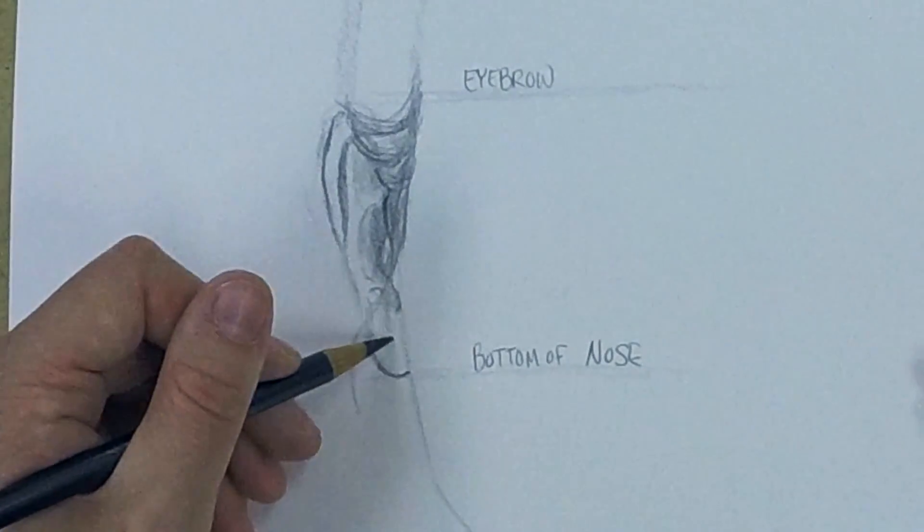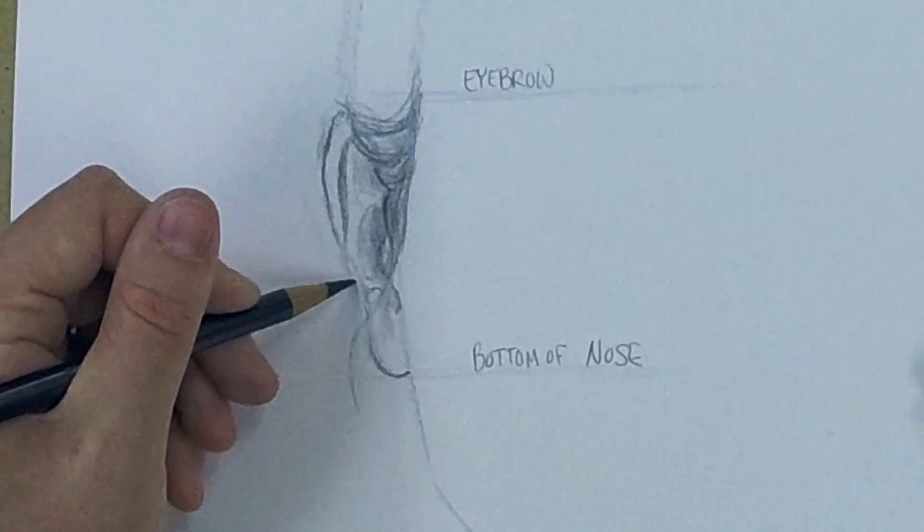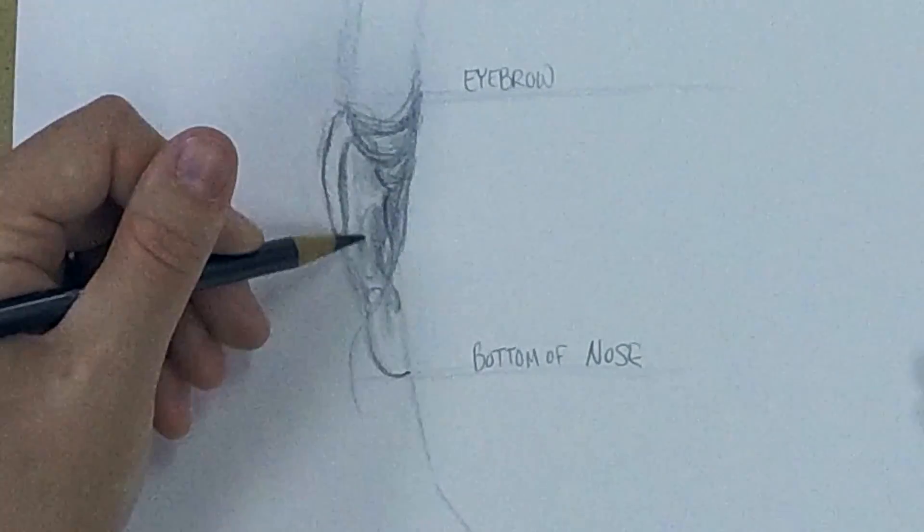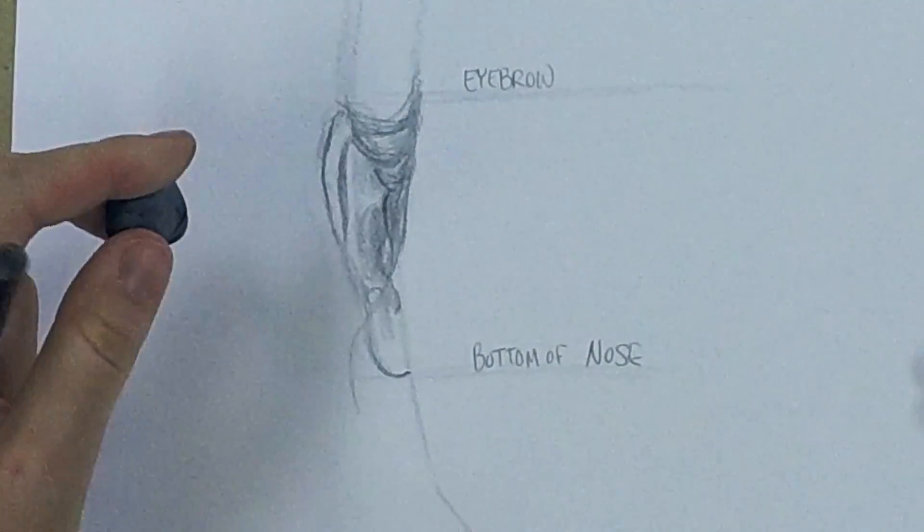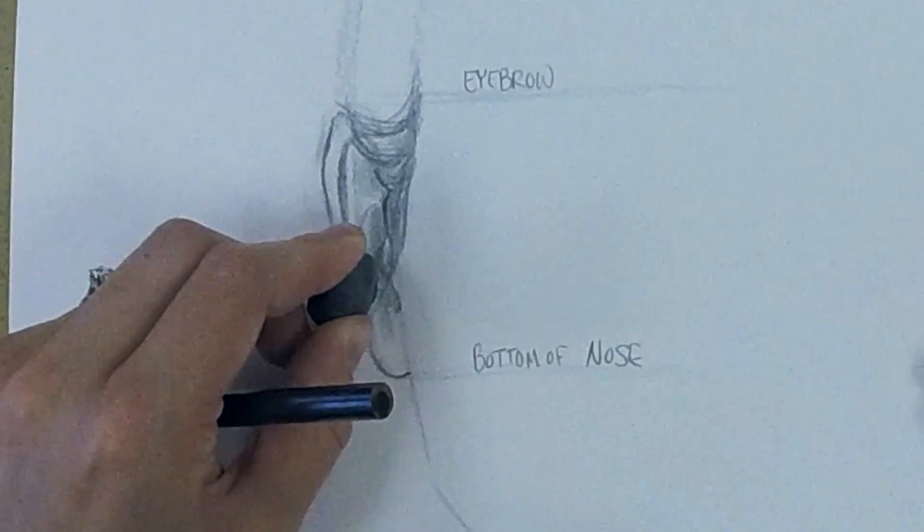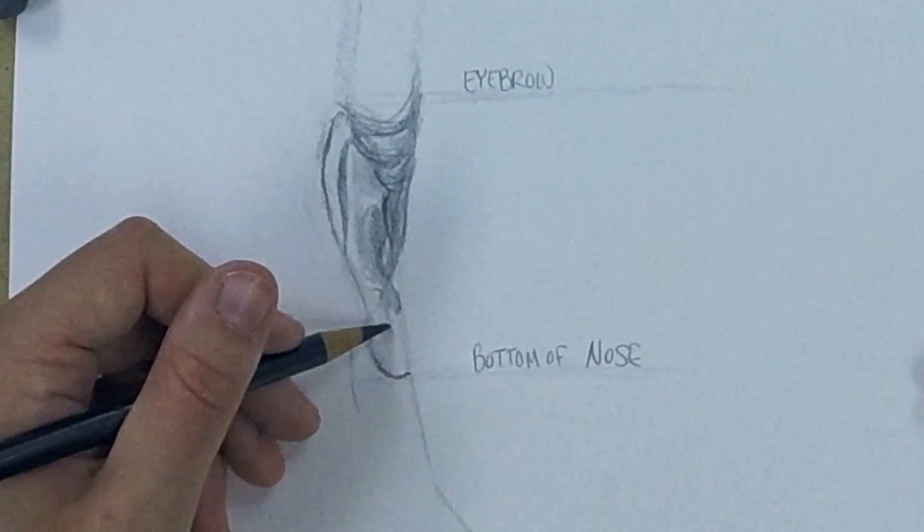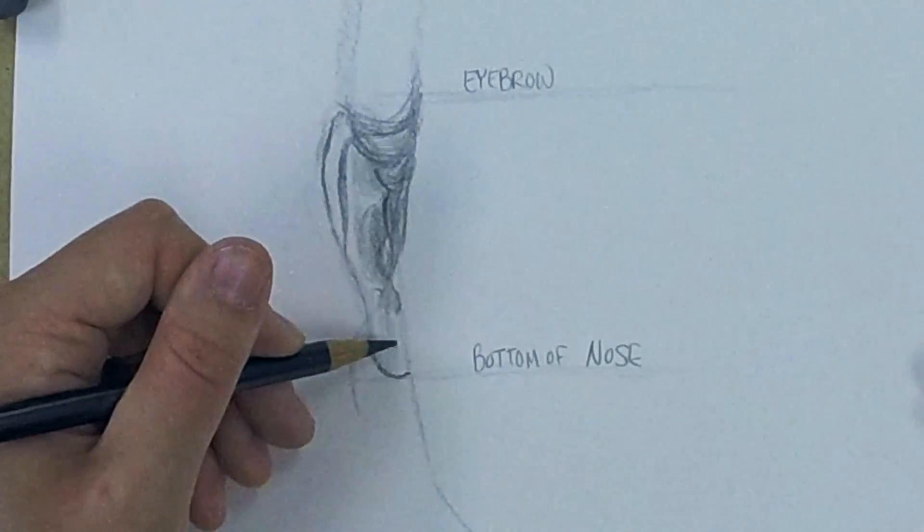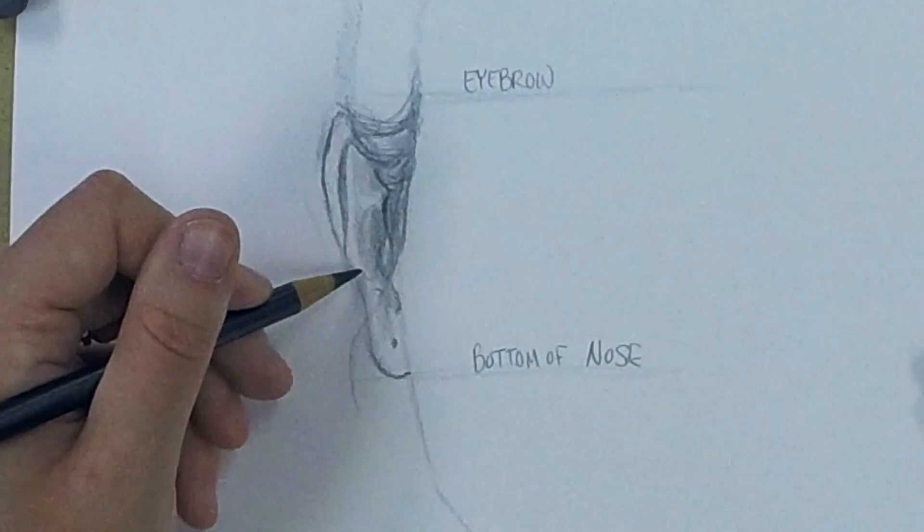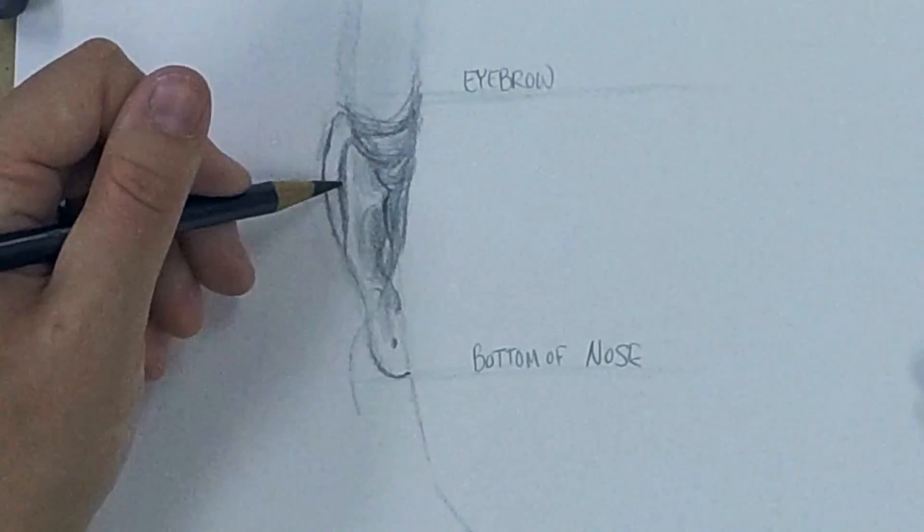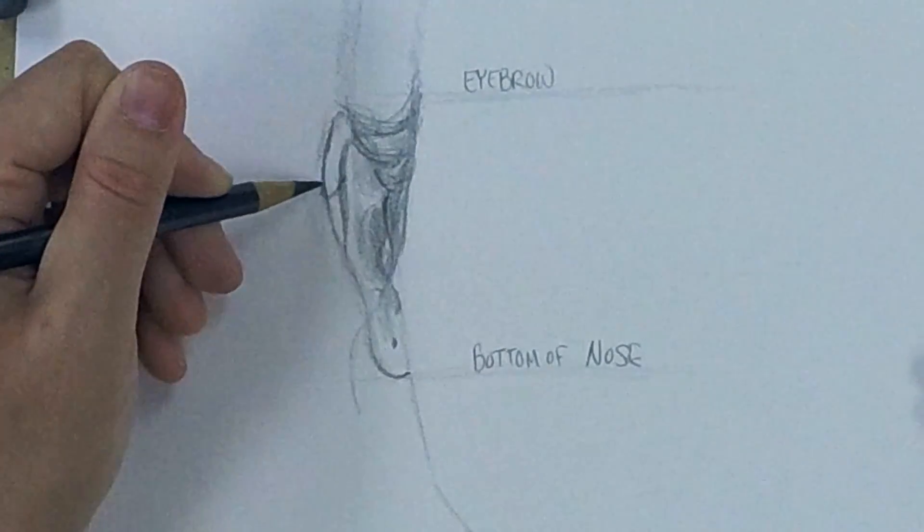Usually our ear lobes have some little indentations where we might have some shading. Some of you might have pierced ears, so you could add that in. Maybe you have an earring, maybe you don't. I've got a little hoop up at the top that we can add in.